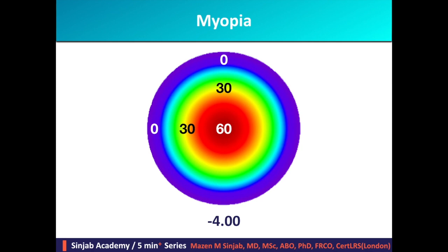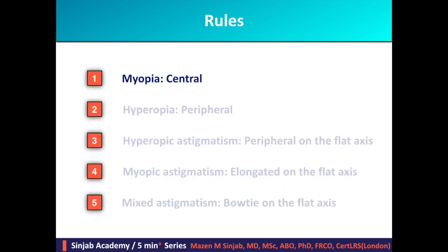This is the myopic ablation profile to correct minus four diopters sphere. As you see, the maximum ablation depth is central and it is 60 microns, because we multiplied minus four by 15 microns because of the 6.5 millimeter optical zone. The maximum ablation depth is central while it decreases towards the periphery. So rule number one: in myopic treatment the ablation profile is central.